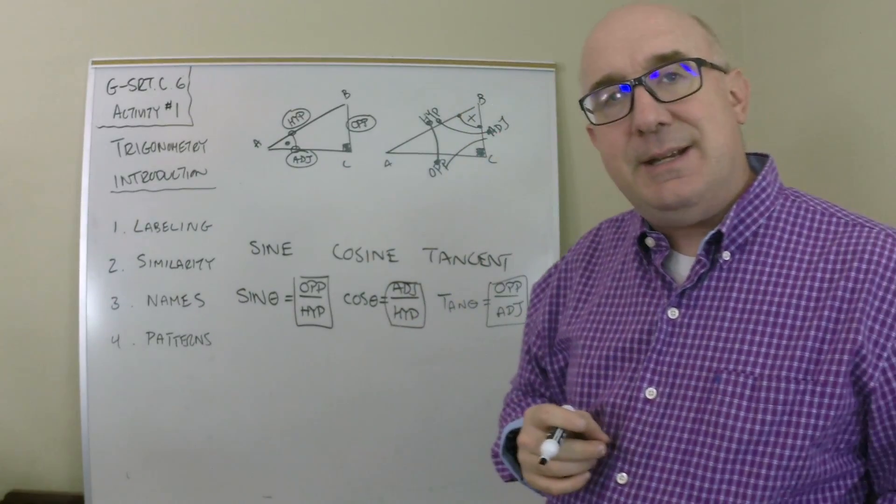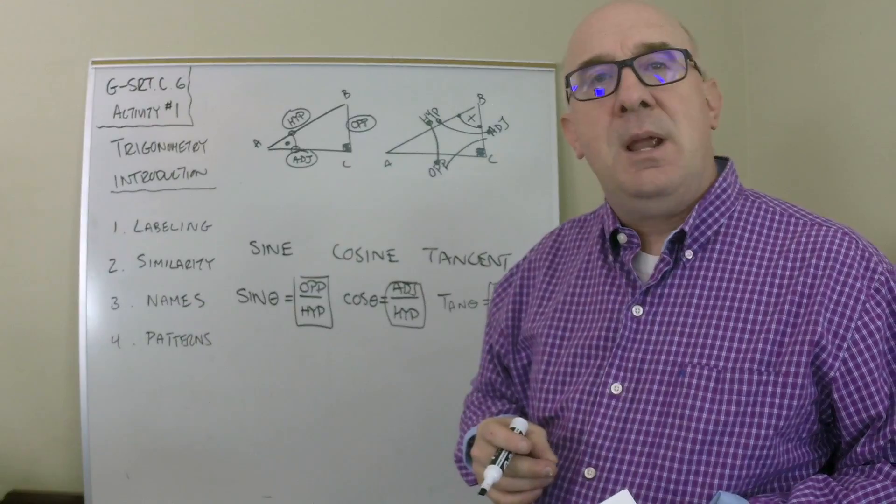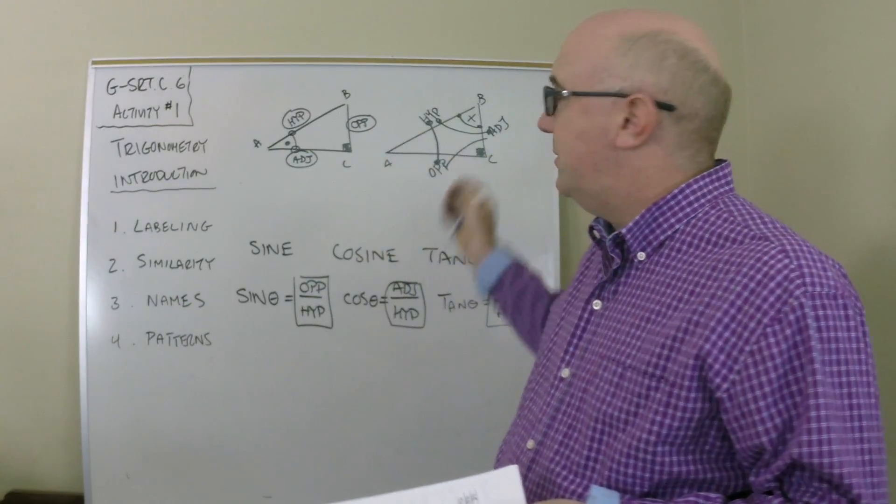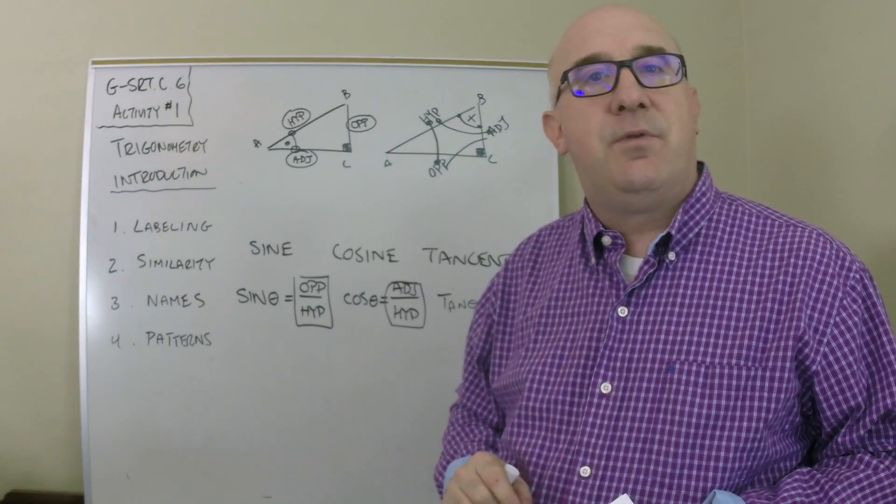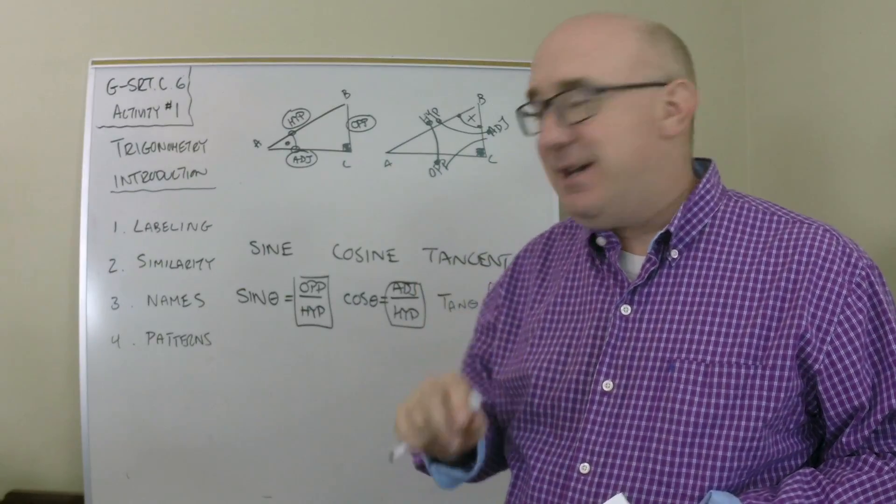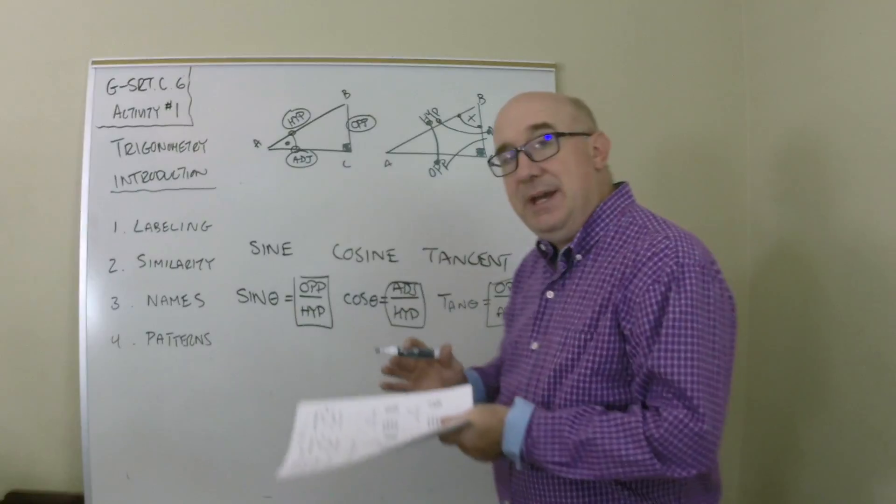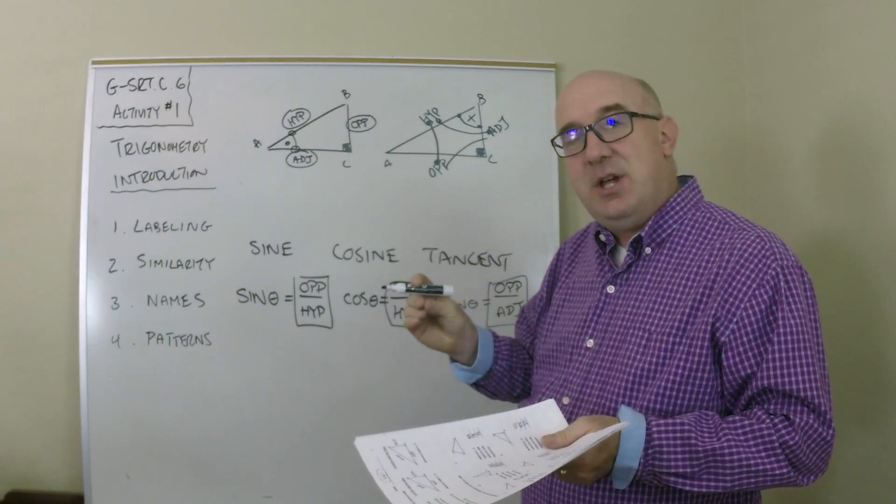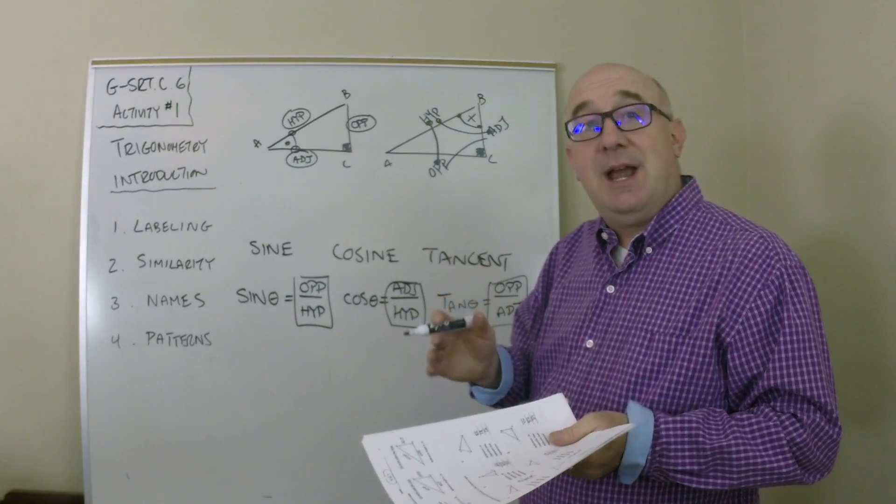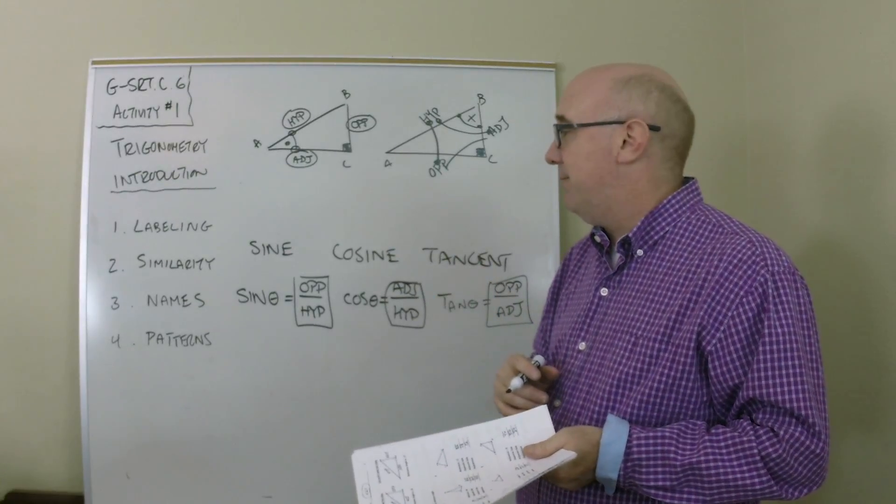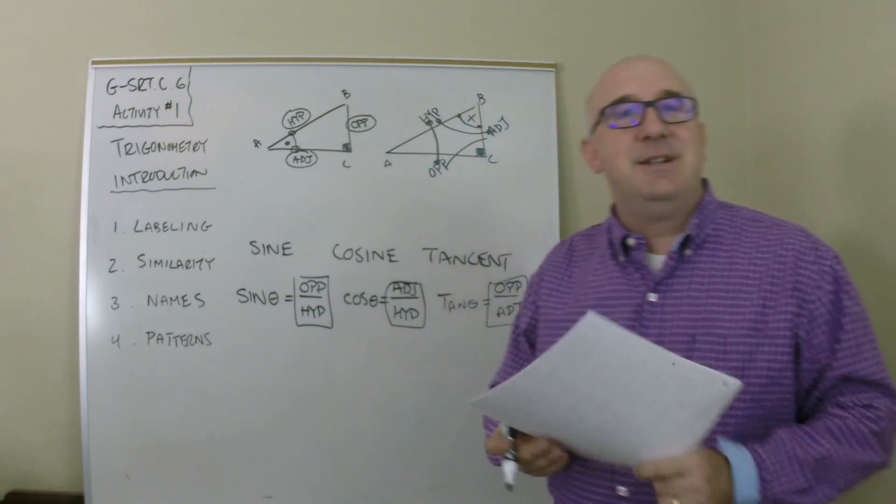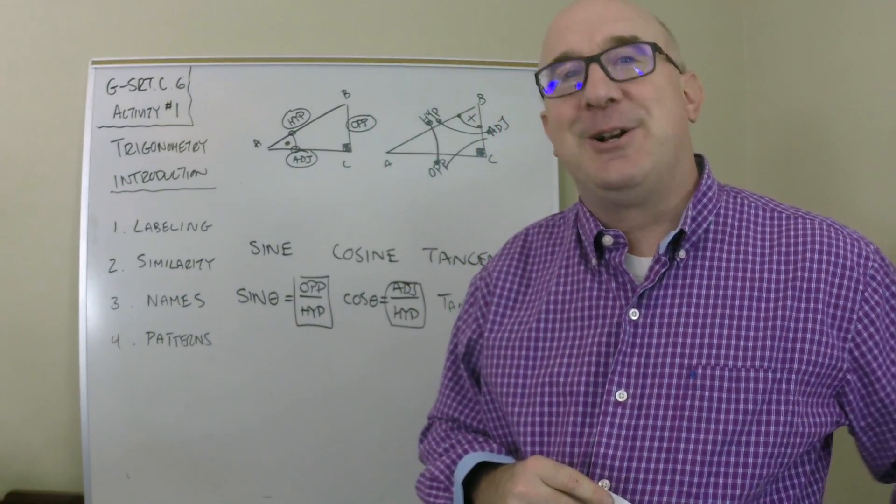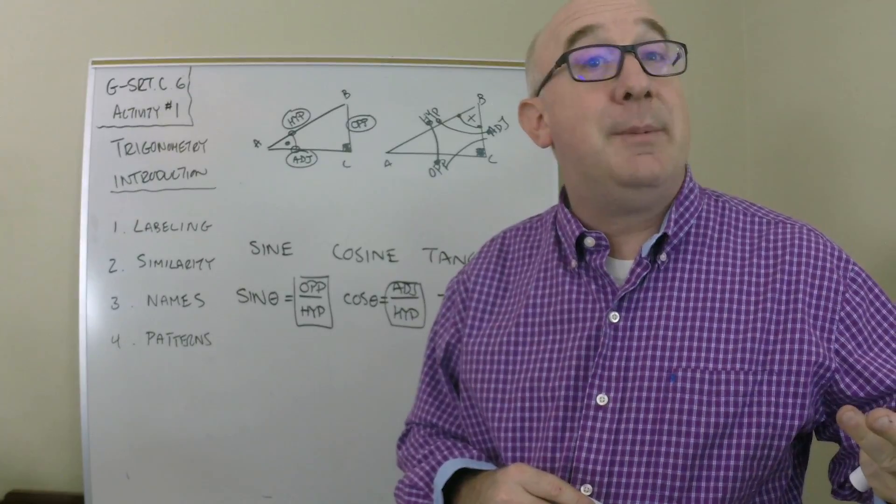And the cool thing is, what you're going to learn, is that if you know the angle, those three ratios can be known for that angle. Because no matter how big or how small, as long as it's that angle and a right angle, you will be proportional and those ratios will be locked in. You'll look at some patterns in the table and do some fun things with that. But this is a little bit of an introduction to what trigonometry is.